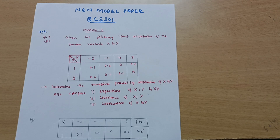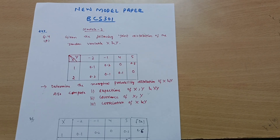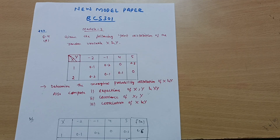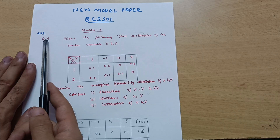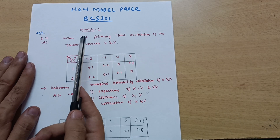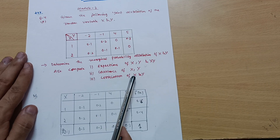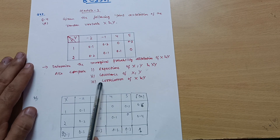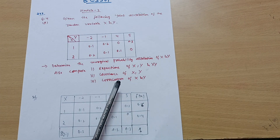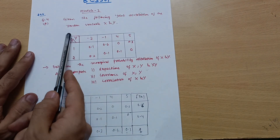Hello everyone and welcome back, dear friends. Hope you are all doing well and your preparations are going well. Do let me know in the comments how your preparation is going. Today I will discuss question number 4a, which is again a joint probability distribution problem. One more thing in this problem is the correlation of X and Y. We have discussed how to calculate expectation and covariance, and here is the new term: correlation of X and Y.